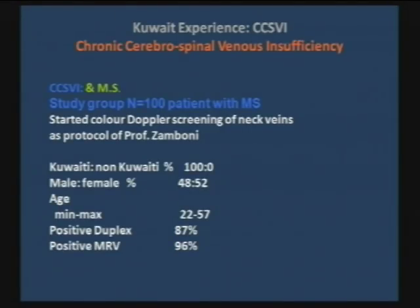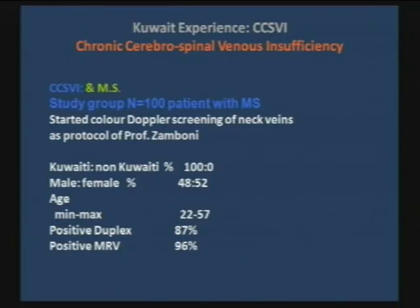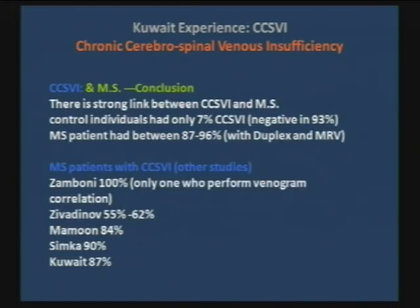The other group was 100 patients with MS. We did them according to the Bonos criteria of sound, and found 87% had a positive duplex scan. When we used MRV, it was 96%. That is again consistent with what others are saying — that MRV may be overestimating areas of stenosis and showing functional stenosis that we're calling significant stenosis. So I would stick with the duplex for now. The result of 87% shows a significant correlation — there is a strong link between CCSVI and MS.